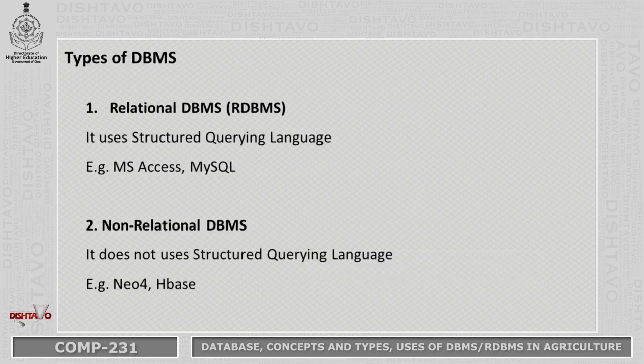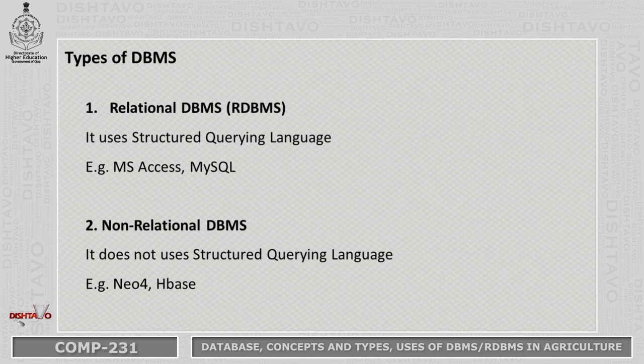There are generally two types of DBMS. The first is relational DBMS, that is RDBMS, which uses Structured Query Language. For example, MS Access and MySQL are RDBMS software. The second is non-relational DBMS — Neo4J and HBase are examples of non-relational DBMS software.